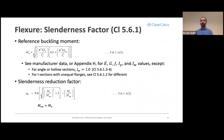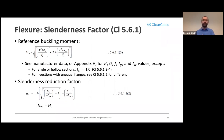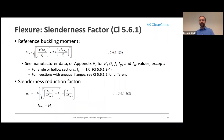With the effective length factor determined, plug into the reference buckling moment equation M_oa. Values for E, G, J, I_y, and I_w (warping constant) are found in manufacturer data or calculated from equations in Appendix H. For angles or hollow sections, I_w = 1.0. For I-sections with unequal flanges, refer to clause 5.6.1.2 for a different equation.